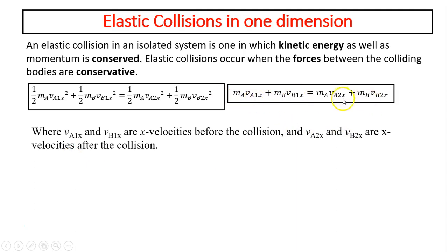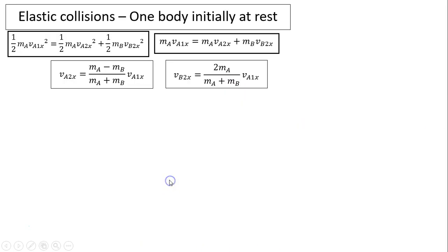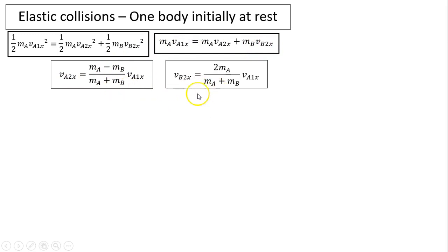In these equations, subscript 1 represents before and subscript 2 represents after the collision. For the special case of an elastic collision where one body is initially at rest — say object B is at rest — using conservation of kinetic energy and conservation of momentum combined, you should be able to derive the velocity after the collision for object A and object B.